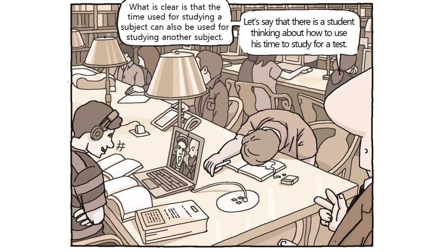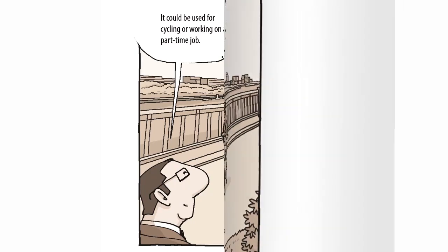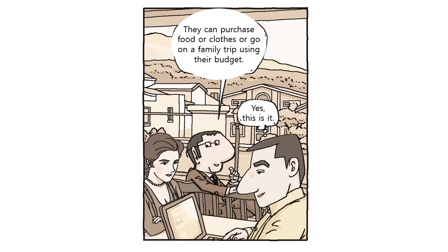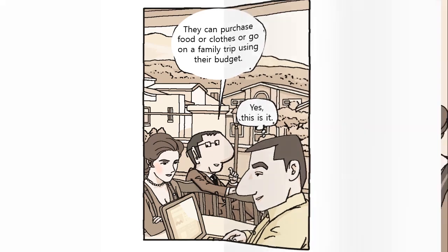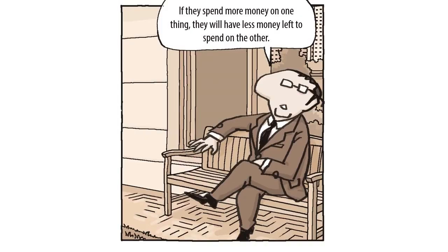A student's time could be used for cycling or working a part-time job. A family can purchase food, clothes, or go on a trip using their budget. If they spend more money on one thing, they will have less money left to spend on the other.